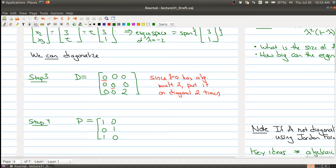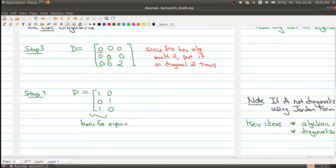This is the basis for the eigenspace of lambda equals 0. So you would notice I'm trying to keep the columns in the same order.